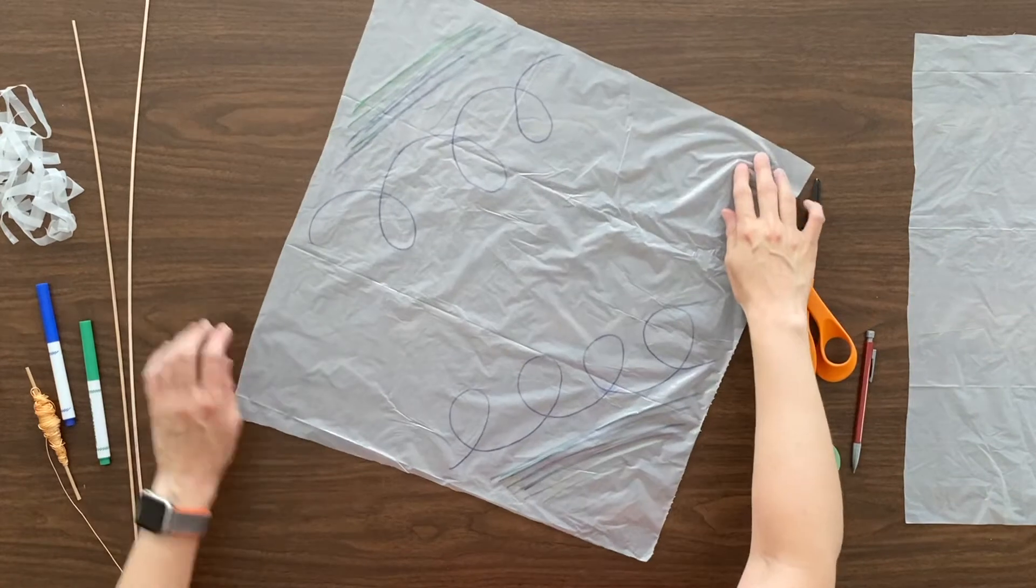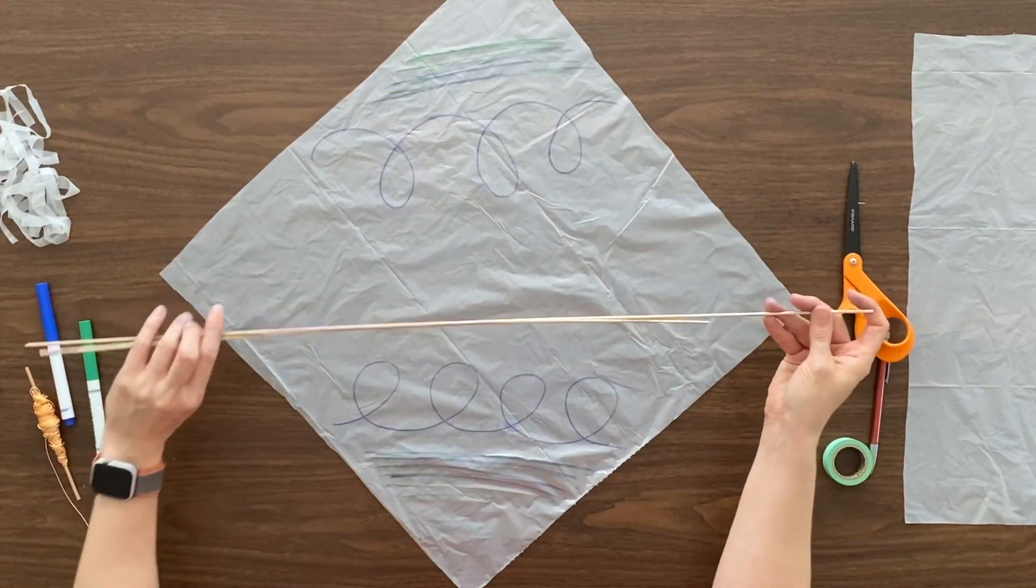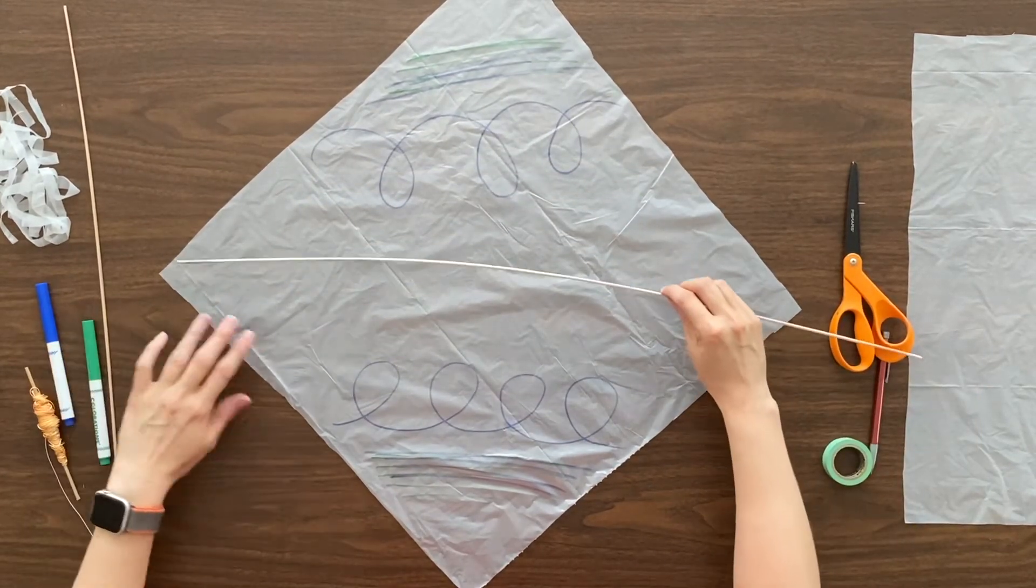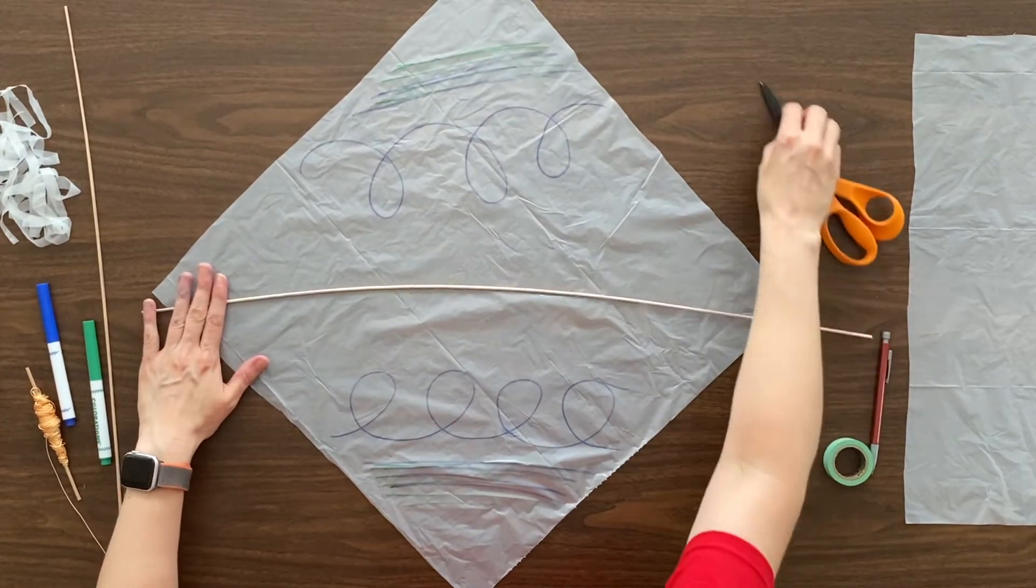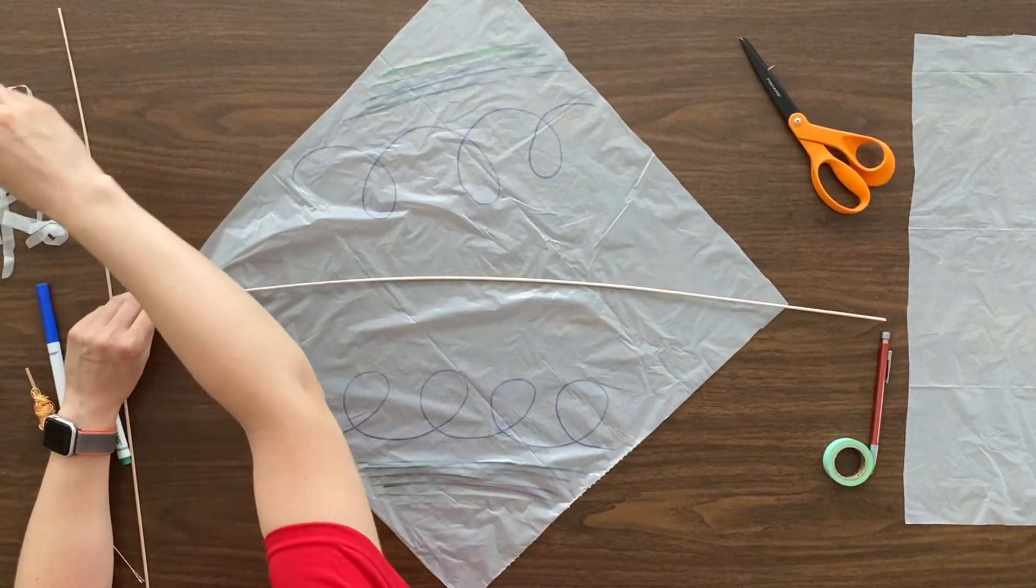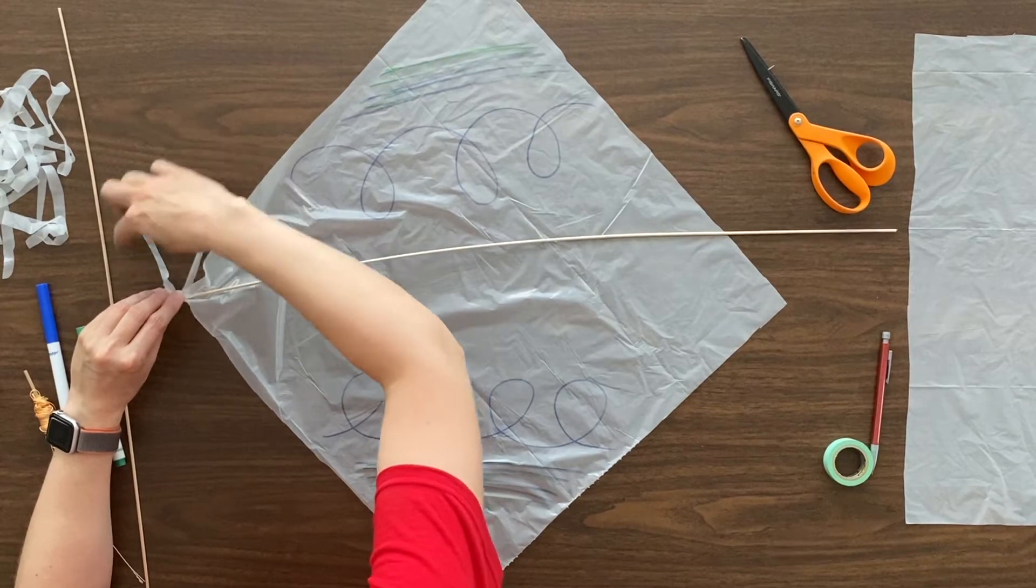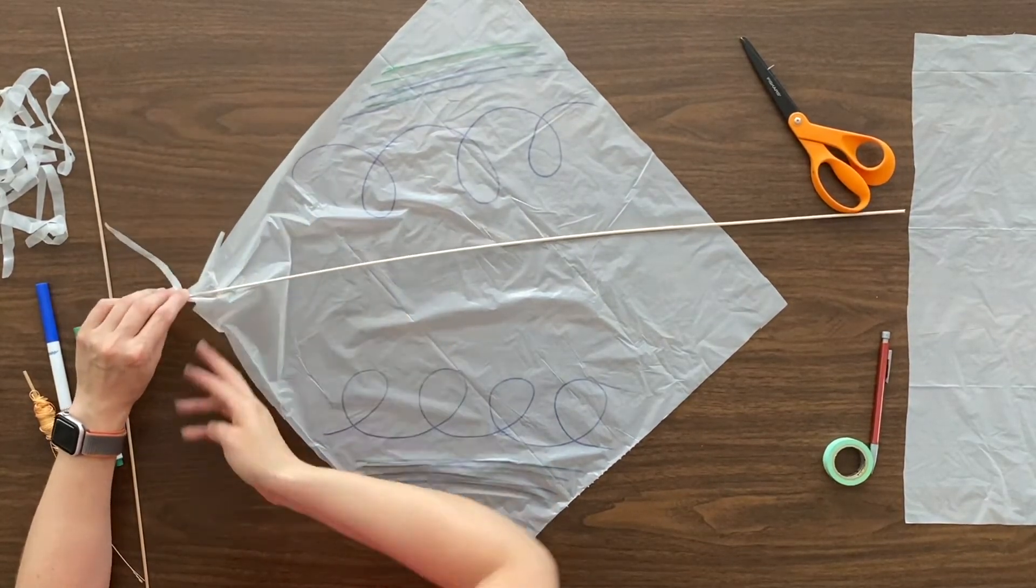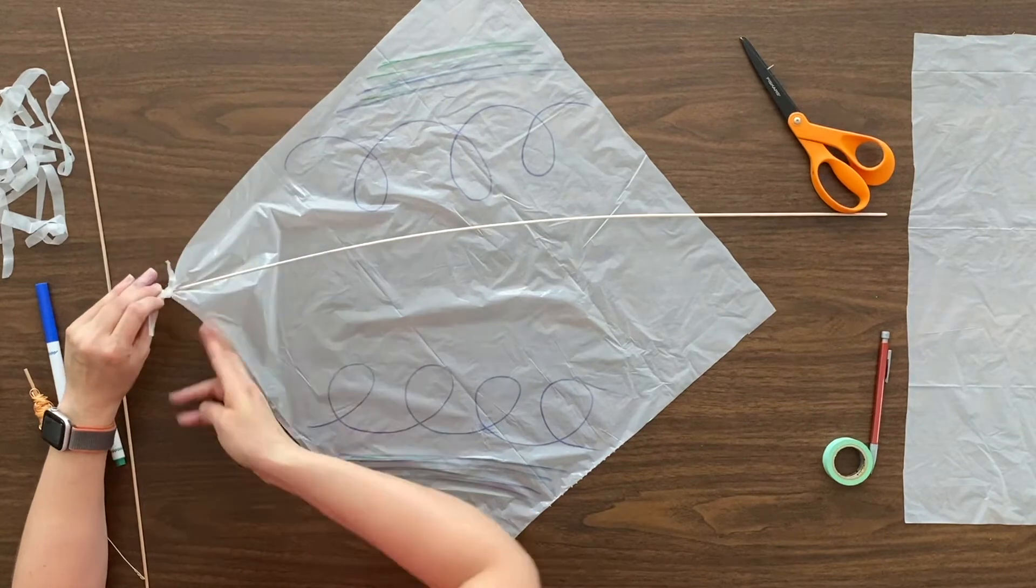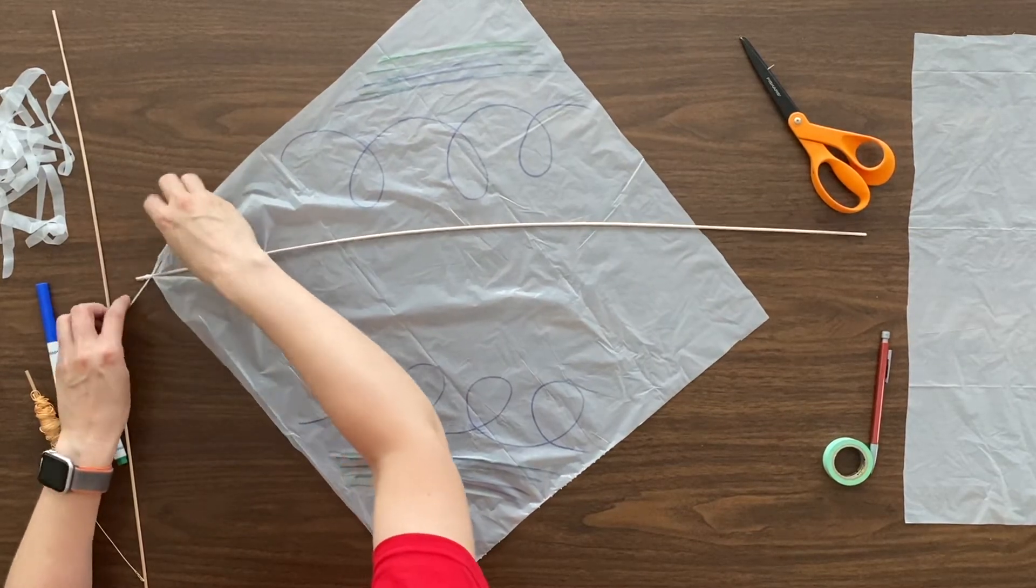Step two, we're going to turn the piece of plastic to where it looks like a diamond. We are going to take our long dowel, give it a practice bend, lay it across the diamond, and tie one end of this plastic to it. Go ahead and leave a long string and wrap the other string around the dowel and the plastic square several times. You want to make sure that plastic is nice and secure. When you feel good about it, tie your plastic strip in a knot.